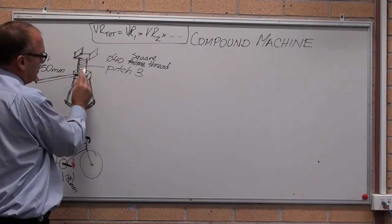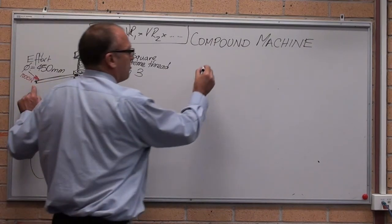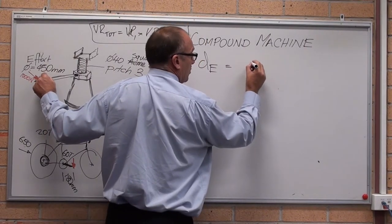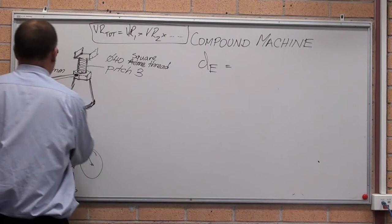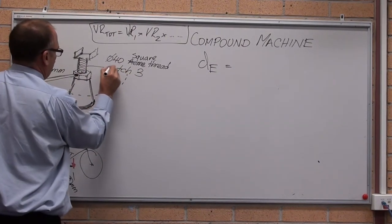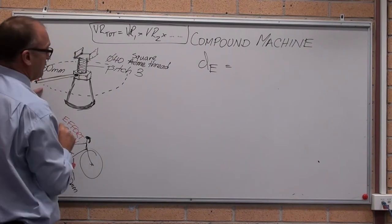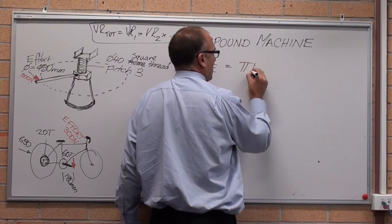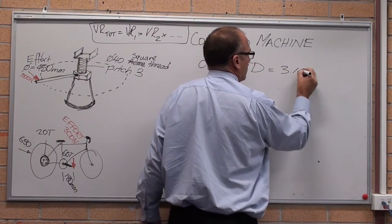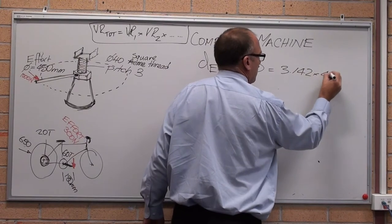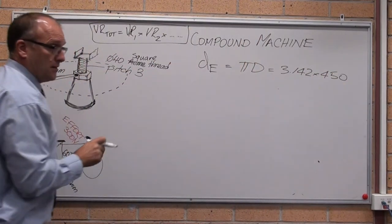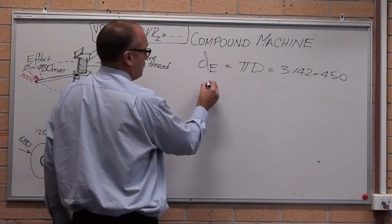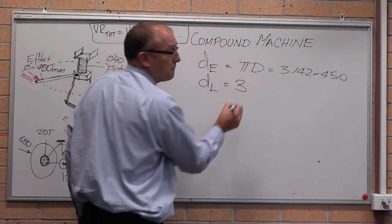Every one turn of that pushes that up 3 millimeters. So distance moved by the effort, it's a 450 diameter handle, or the handle moves around in 450 diameter. Distance moved by the effort in one full revolution is pi D equals 3.142 times 450. And I'll calculate that out in a sec. Distance moved by the load is one full turn that rises by 3 millimeters.